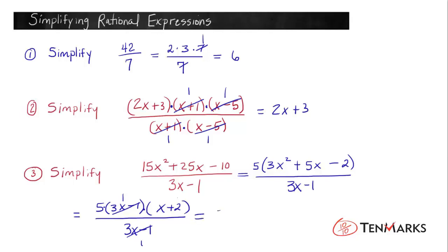And then if we do the multiplication, in the numerator, we've got 5 times 1 times x plus 2. And then in the denominator, we just have a 1. So there's no need to write that. We could go ahead and simplify this a little further just by distributing, getting rid of the parentheses. And that's going to give 5x plus 10.